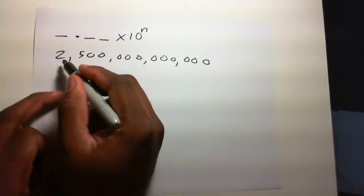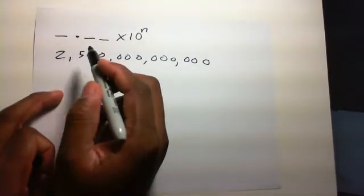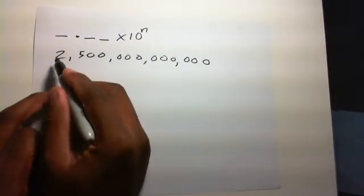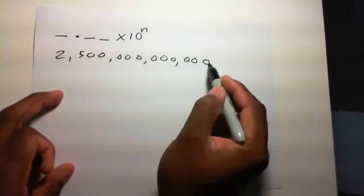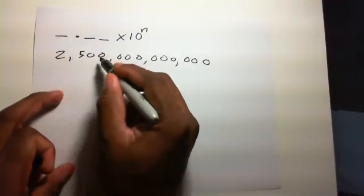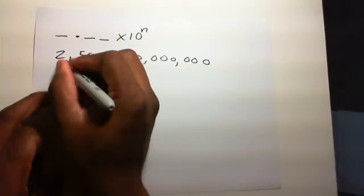You would use it for numbers like this. This is $2,500,000,000,000. To write this in scientific notation, you need to take the leftmost non-zero digit and move it to the left of the decimal point. You need to count how many spaces you move because that's very important.